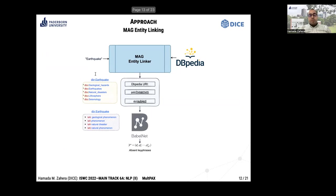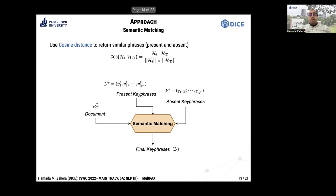With this DBpedia URI, we can find more semantic correlations relevant to absent keyphrases, and link it with DBpedia to find more relevant terms using these semantic correlations. Finally, we embed the document, candidate present keyphrases, and candidate absent keyphrases all in one semantic space, and use cosine similarity to find the top keyphrases as the final output.